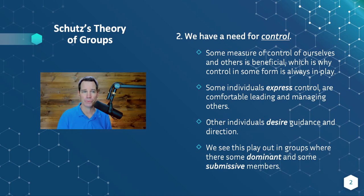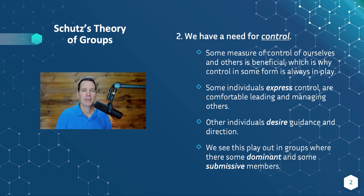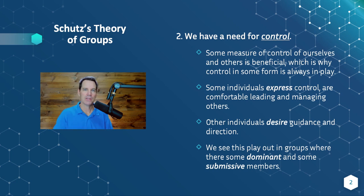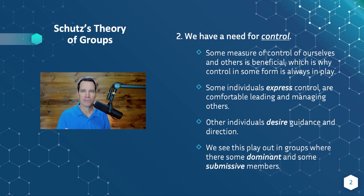The next variable is control. We all have a need for control. Some measure of control over ourselves and others is beneficial, which is why control is always at play in one way or another. The word control can feel like a dirty word, but some measure of it is important and necessary. Just like inclusion, some people are more likely to express control and are comfortable leading and managing other people and processes. Other people desire that guidance more than they express it — they want others to give them direction. Inevitably someone will say, 'I don't want to be a leader, I want someone else to carry that.' There's no denying that some people are in dominant roles and some people are in more submissive roles in a group situation.